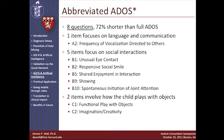This classifier contains only eight questions — 72% shorter than the full ADOS. One item focuses on language and communication, five on social interactions, and two on how the child plays with objects. When we look at validation and coverage in terms of age, we see widespread coverage of ages with accuracy at nearly 100%.